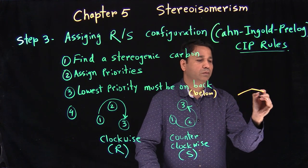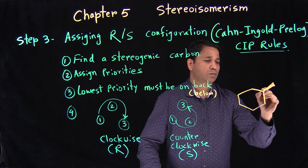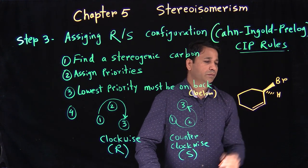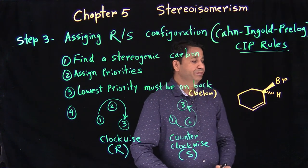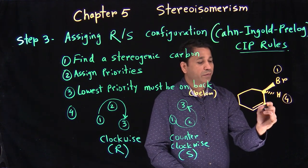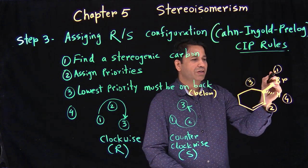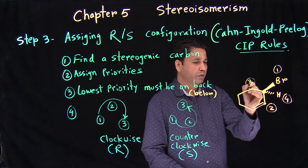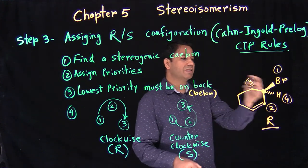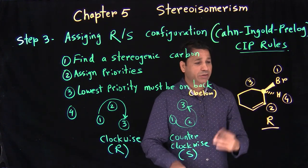Let's try another example. This carbon is stereogenic. We assign priorities: this gets number one, this gets number four, this gets number two, and this gets number three. Going one to two to three, we are going clockwise, so that is R. The configuration for that stereogenic carbon is R. It's just a coincidence every example we pick is R — that's not always true. We'll do examples with R and S or just S.